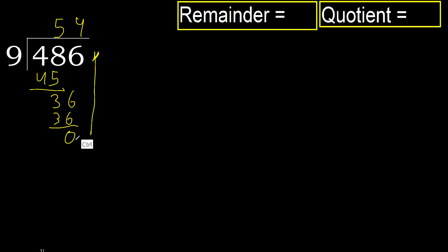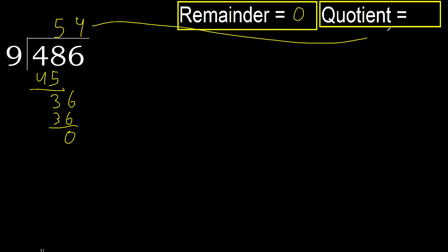Next. There is no number. Therefore, finish it. Okay. 486 divided by 9 is 54.